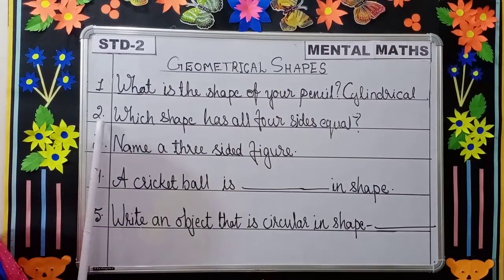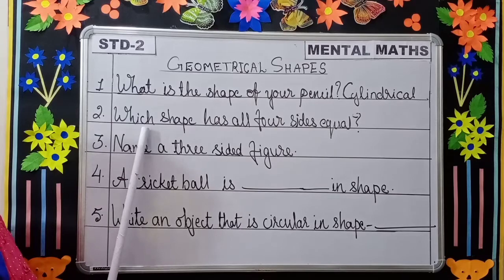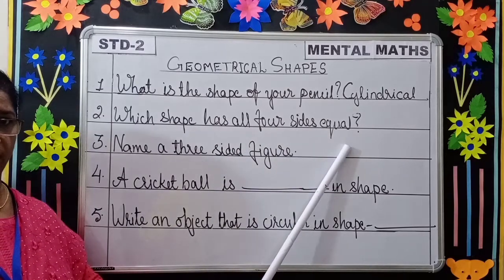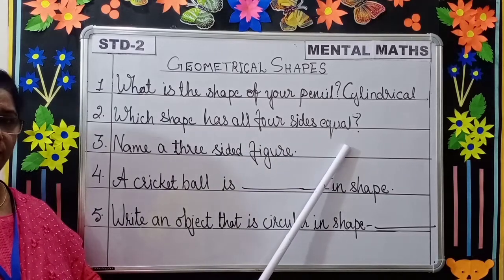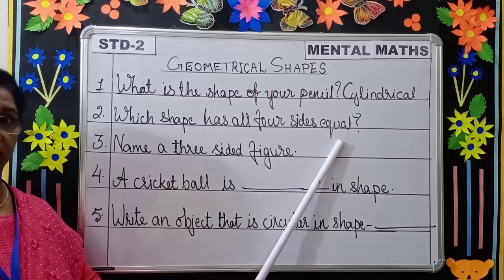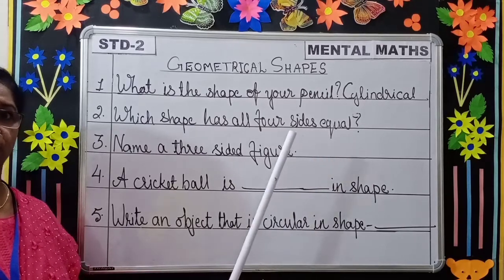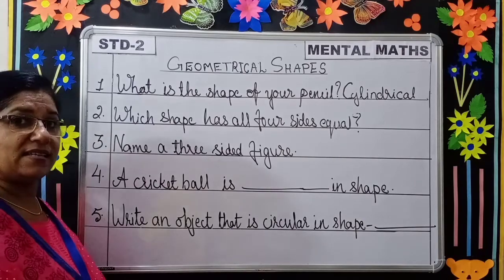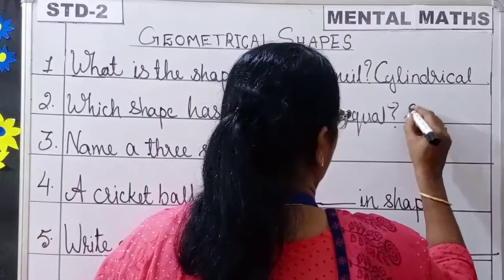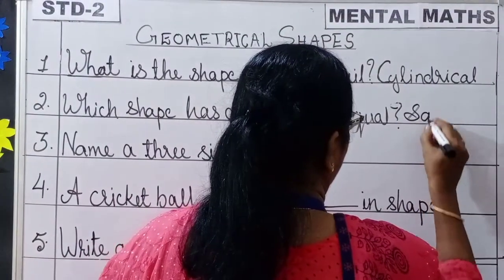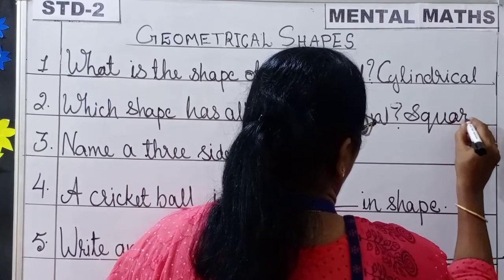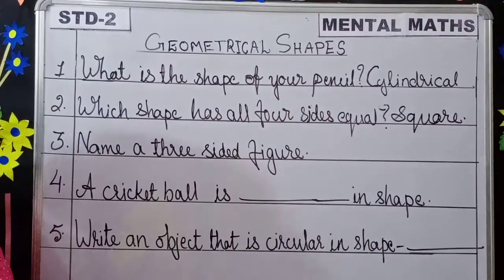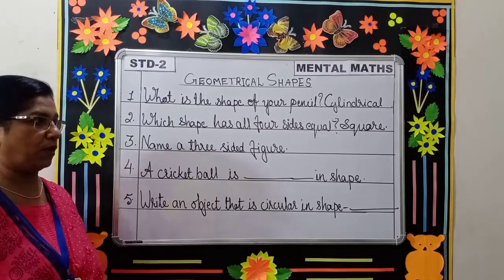Coming to the next question: which shape has all four sides equal? Can you say the name? The shape that has all four sides equal — it is a square. A square has all its four sides equal.